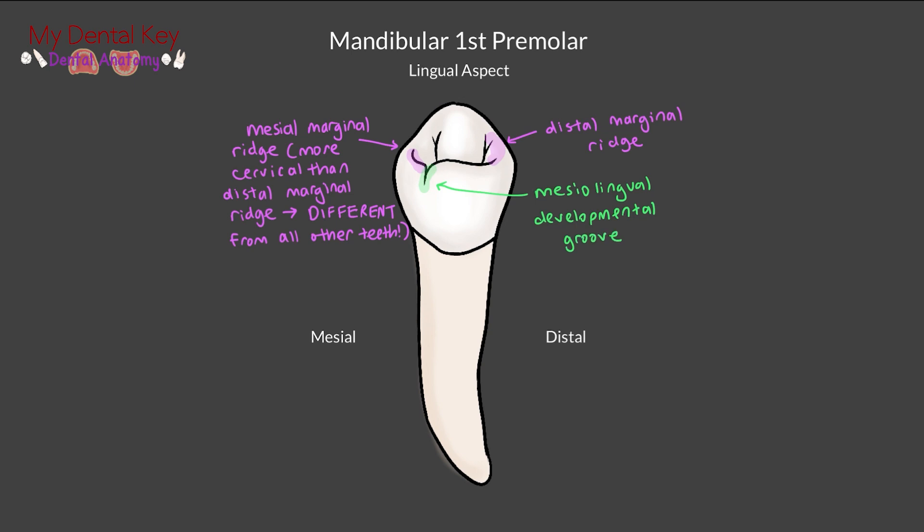As a clinical note, if you're doing a class 2 preparation, make sure to slant the pulpal floor. It will need to be higher buccally to avoid the large buccal pulp horn.